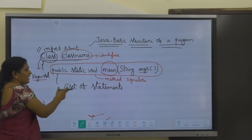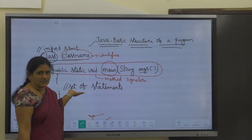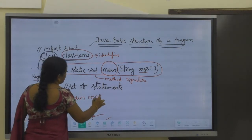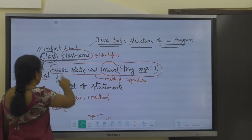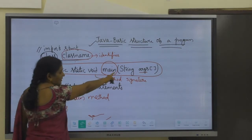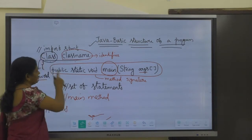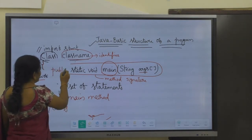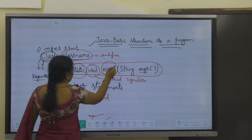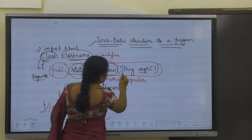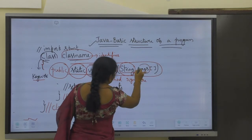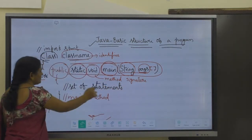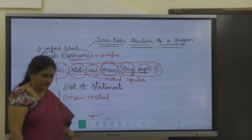The method signature should not be deviated — it should be exactly: public, static, void, main, with one argument of type String array. Open the method, write whatever statements and logic you want within the main method, then close the main method and close the class. This is the way we usually write a basic Java program. Public, static, void, and main are all keywords — main is the method name.